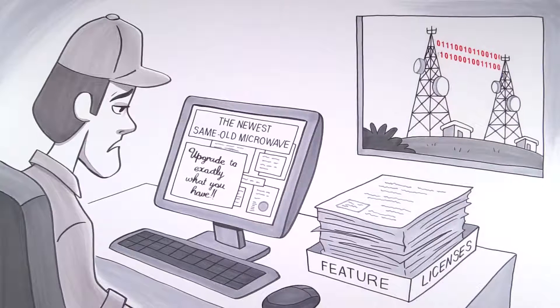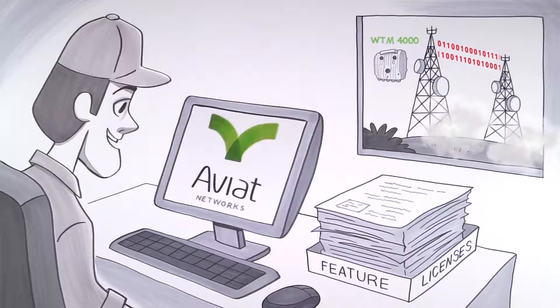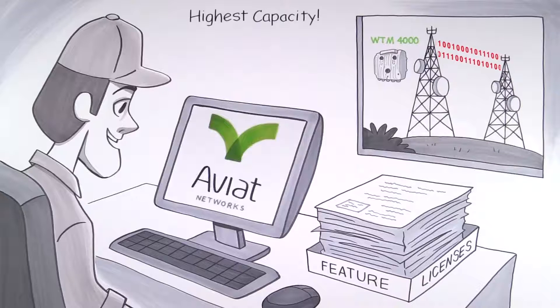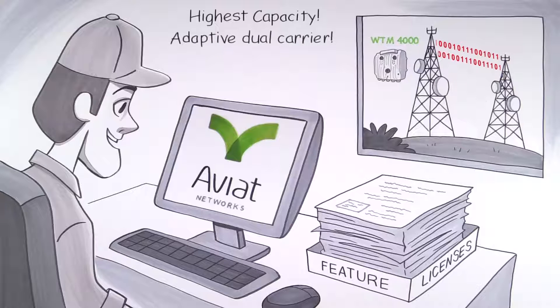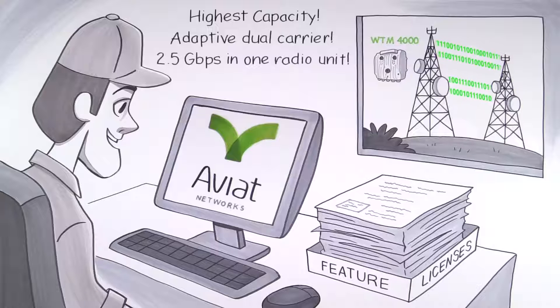Joe can get rid of the headache with the all-outdoor WTM 4000 from AVIAT Networks. No shelters and the highest capacity product ever created. The innovative adaptive dual carrier feature doubles the capacity in a single radio unit for the lowest cost and power consumption per bit.